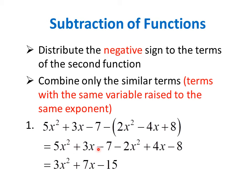To simplify this expression, let's combine the similar terms. First we have the x squared terms: 5x squared minus 2x squared gives us 3x squared. Then 3x plus 4x is 7x. And the number constants: minus 7 minus 8 gives us negative 15.